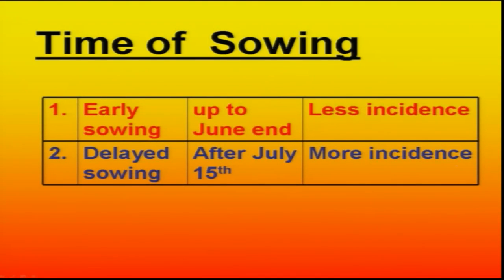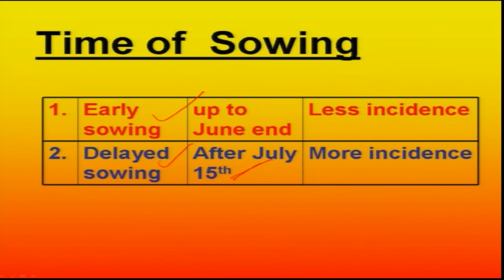Time of sowing is most important. Studies have clearly indicated that sowing up to the end of June results in less incidence in November. Whereas any delayed sowing after the 15th of July is going to result in higher and higher incidence in November month.